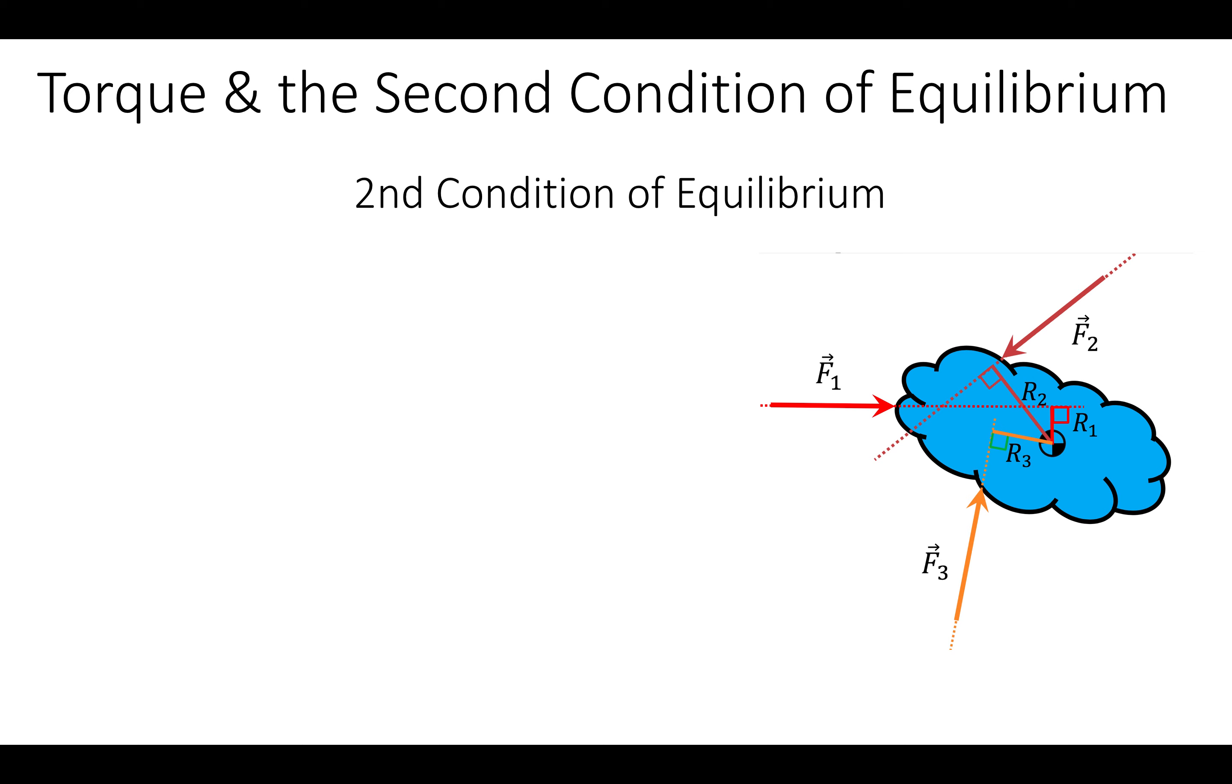Now, the second condition involves how those forces are oriented and how that relates to how an object would rotate. And so when we talk about an object rotating or the potential for an object to rotate, we talk about something called torque. The second condition just says that the sum of all the torques, which we write as a Greek letter tau, the sum must equal zero. Because we're only going to have forces in the x-y plane, all the torques will either cause a positive sense of rotation, which is counterclockwise, or a negative sense of rotation, which is clockwise.